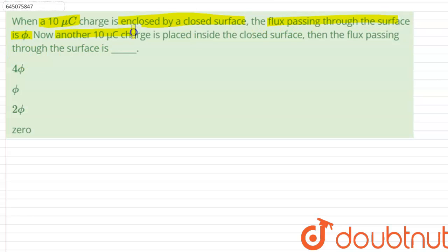Now another 10 micro coulomb charge is placed inside the closed surface. Then the flux passing through the surface is.